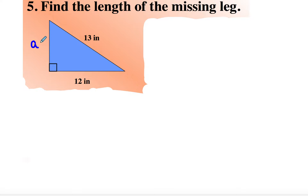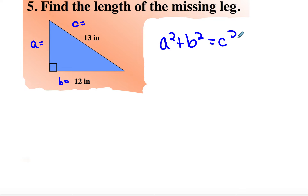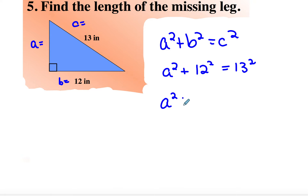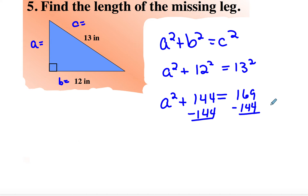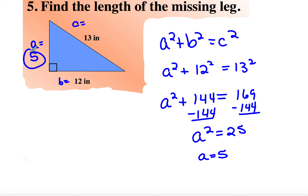On this one, we're trying to find the side I usually call A, so I'll keep that as A. This is B and this is C. So A squared plus B squared is equal to C squared. I don't know A squared, so I leave it as A squared plus 12 squared is equal to 13 squared. That gives A squared plus 144 is equal to 169. Subtracting 144 from both sides, I get A squared is equal to 25, so A is equal to 5 because it comes out nicely.